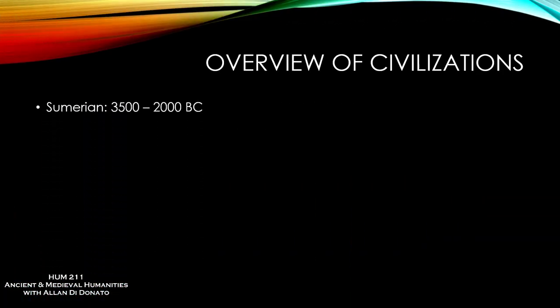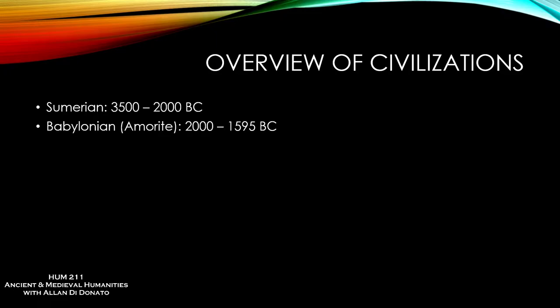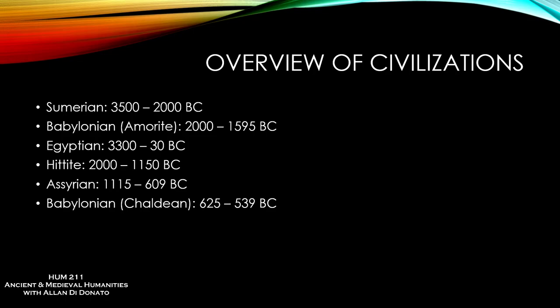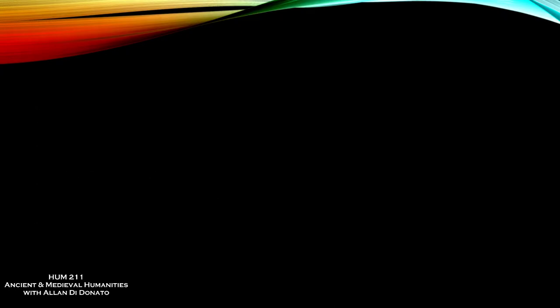Let's do an overview of the civilizations we're going to cover today: the Sumerian, Babylonian — what we call the Amorite period, the Old Babylonian period — Ancient Egypt, which is probably the longest continuously running kingdom on the list. The Hittites, which may be less familiar to some of you. The Assyrians, the Babylonians meaning the new Babylonian empire or Chaldean period, and finally the Persian period. Just by the dates, from the Sumerians at 3500 BC — the beginning of the Bronze Age — to AD 641, that's over 4,000 years of history.